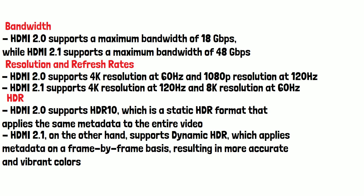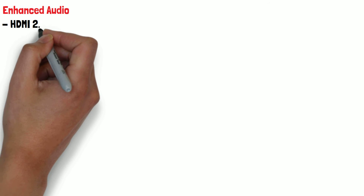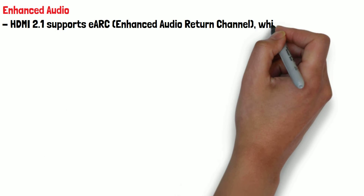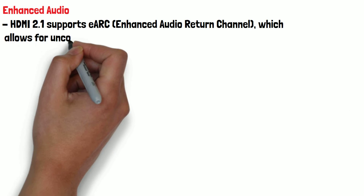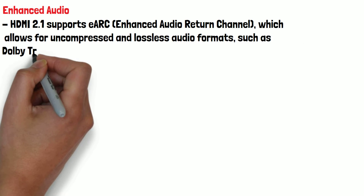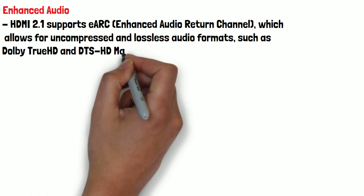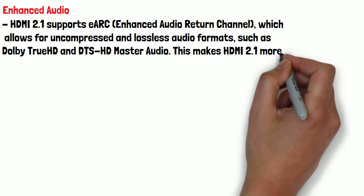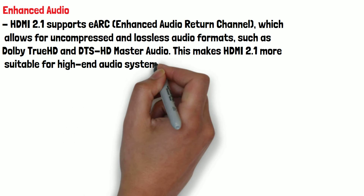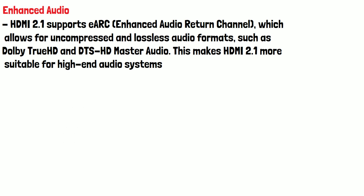Enhanced audio is another advantage for HDMI 2.1. It supports the Enhanced Audio Return Channel, which allows for uncompressed and lossless audio formats such as Dolby TrueHD and DTS-HD Master Audio. This makes HDMI 2.1 more suitable for high-end audio systems.